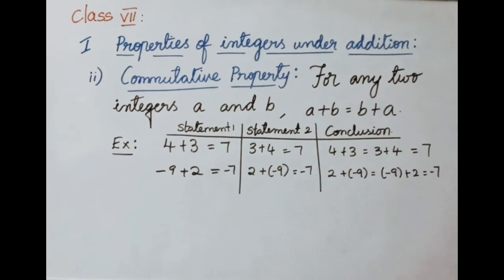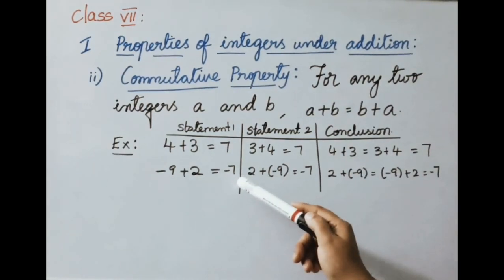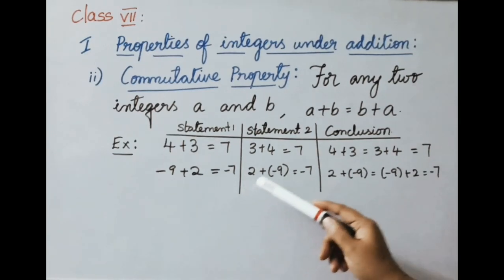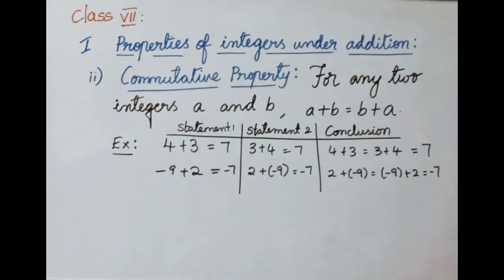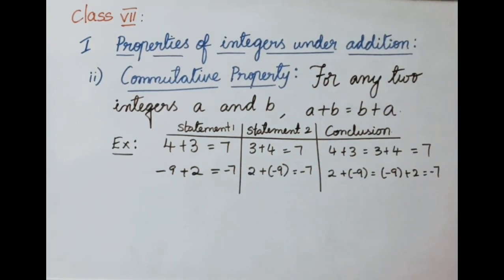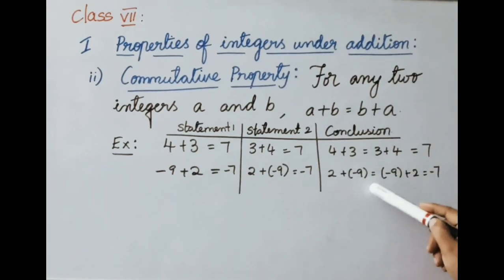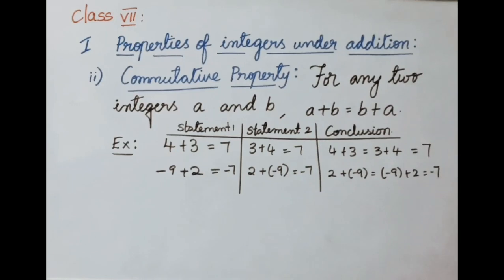One more example: minus 9 plus 2 equals minus 7. And 2 plus minus 9 also equals minus 7. Whether we compute A plus B or B plus A, we get the same answer, minus 7. Therefore 2 plus minus 9 equals minus 9 plus 2 — that is A plus B equals B plus A.